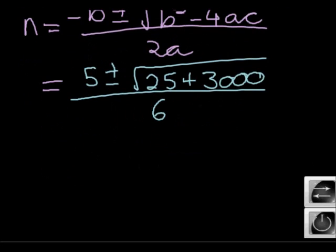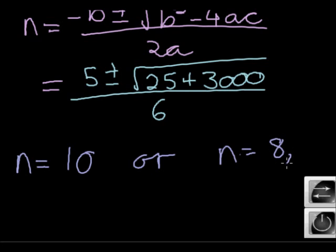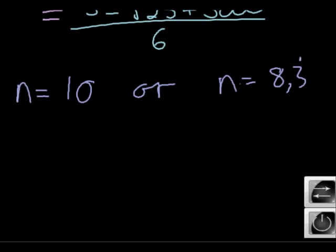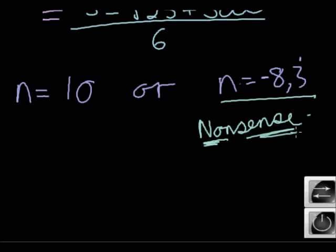So you guys are going to give me two answers. What's the two answers? 10. N is 10. Or, guys, you have to give both answers. Or N is negative 8 comma 3 repetitive. Which one of that is valid? This one is even negative. How on earth can you have negative number of terms? This is nonsense. It makes no sense. So that's nonsense. We're going to ignore that. So how many terms will add up to negative 125? Ten terms.